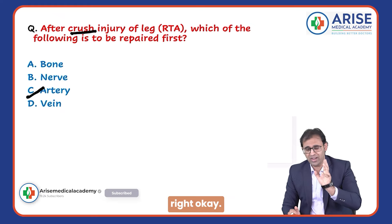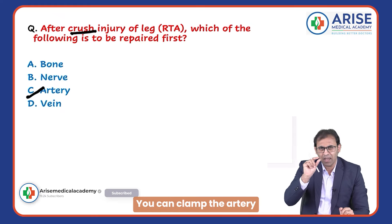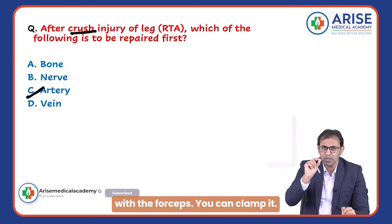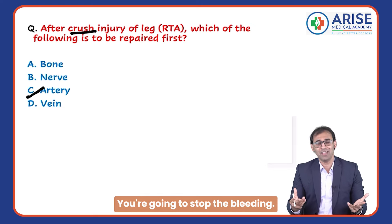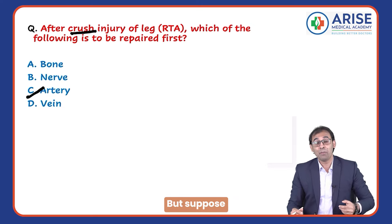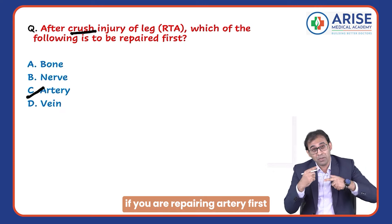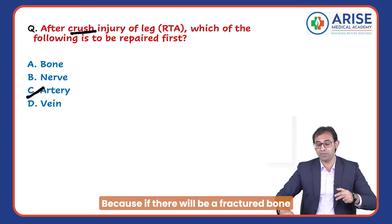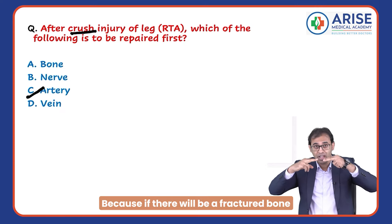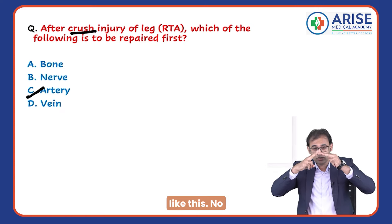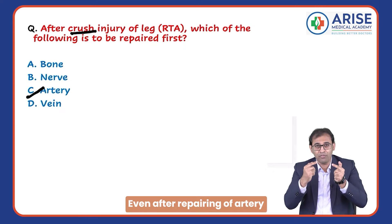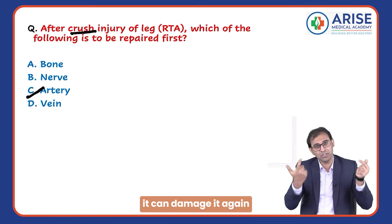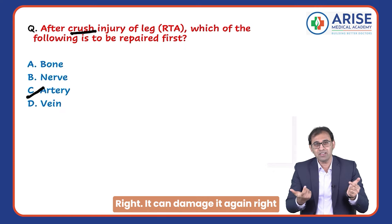You want to repair the artery because you want to stop bleeding — you can clamp the artery with forceps. But suppose if you repair the artery first and there is a fractured bone with spicules, even after repairing the artery, the spicules can damage it again.